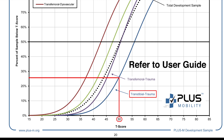Refer to the user guide for a breakdown of T-scores based on gender, age, level, and cause of amputation for both unilateral and bilateral amputees.